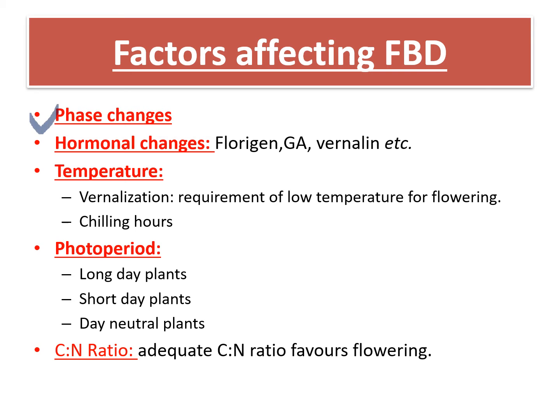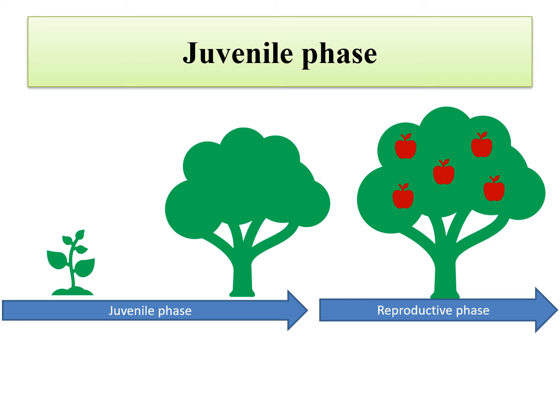The first factor is phase changes. Any plant has different developmental stages: the embryonic stage, then the juvenile phase, then a transition phase, and ultimately the reproductive phase. The juvenile phase is that phase of a plant when the plant is not able to produce flowers — there will be no flower bud differentiation, no flower produced, and no fruit set during the juvenile phase.